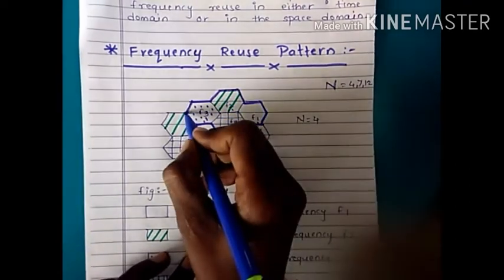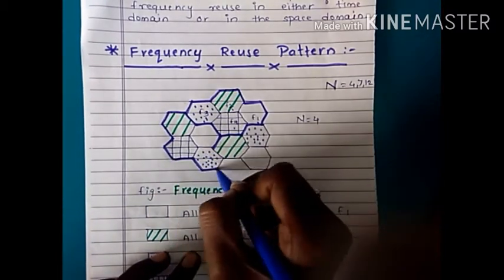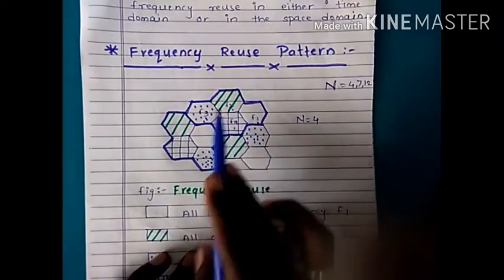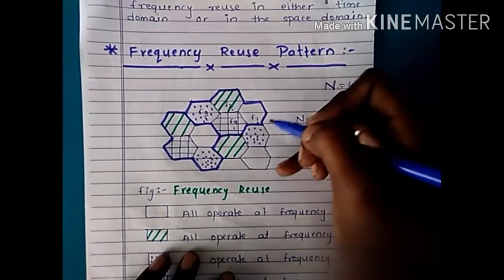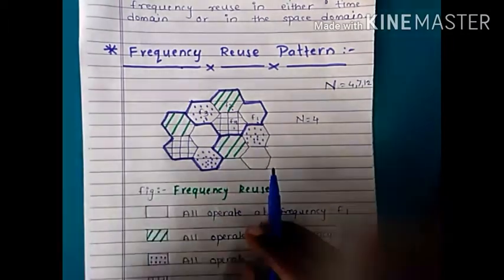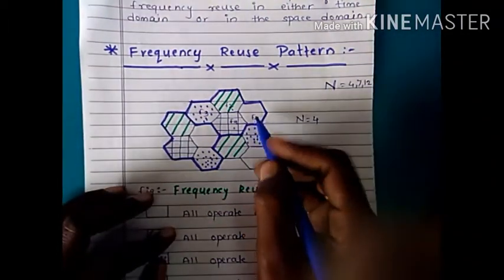In the diagram you can see four different cells with different frequencies. A cluster consists of cells with different frequencies. F1 is assigned to one cell, F2 to another, F3 to another.